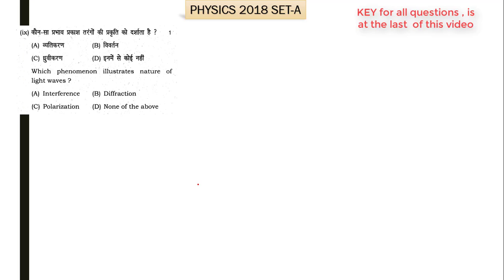The ninth part asks: which phenomenon states the nature of light waves — interference, diffraction, polarization, or none of the above? This question is not okay because something seems missing. Interference, diffraction, and polarization each give some answer depending on what type of nature — wave, particle, or electromagnetic — is being asked. The board should give one grace mark for this question.